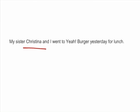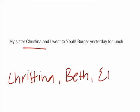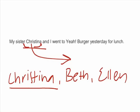That's because Christina is actually important to the sentence — she is essential for you to understand it. That's because I don't just have one sister; I have three sisters: Christina, Beth, and Ellen. But I only went to Yaburger with one sister — Christina. If commas were surrounding the word Christina, that would mean she is not an essential part of this sentence and we could just pop her right out, and the sentence would still hold the same meaning.